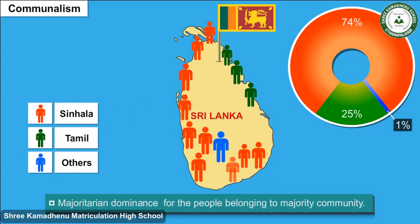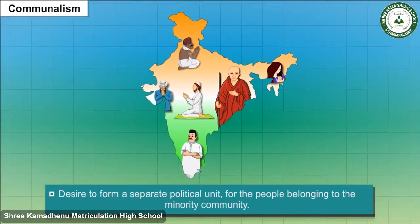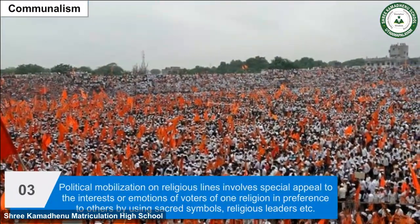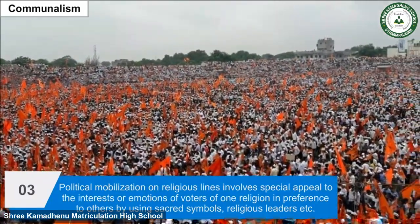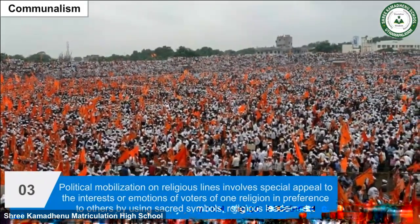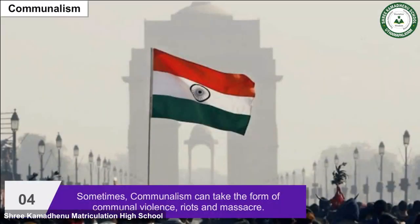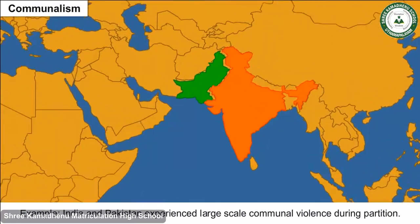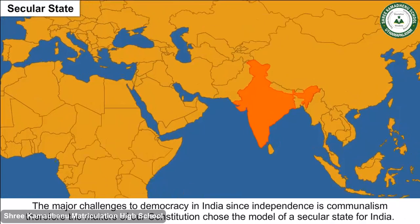Communal dominance can take the following forms depending on the strength of the community: majoritarian dominance for those belonging to the majority community; desire to form a separate political unit for those in the minority community; and political mobilization on religious lines, involving special appeal to the interests or emotions of voters of one religion using sacred symbols, religious leaders, etc. Sometimes communalism can take the form of communal violence, riots and massacre — for example, India and Pakistan experienced large-scale communal violence during Partition.